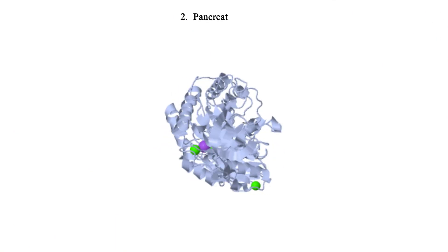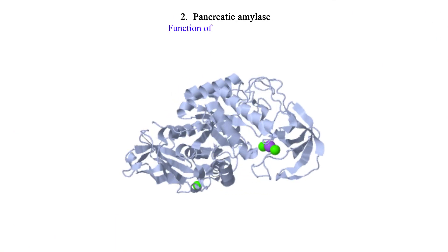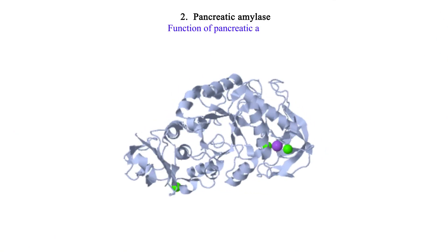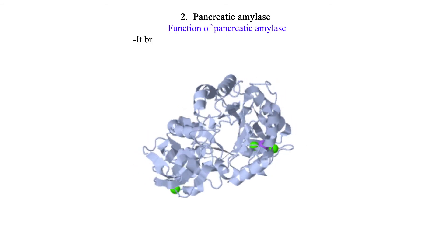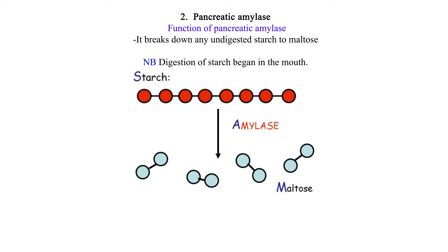2. Pancreatic amylase. Function of pancreatic amylase: It breaks down any undigested starch to maltose. NB: Digestion of starch began in the mouth.